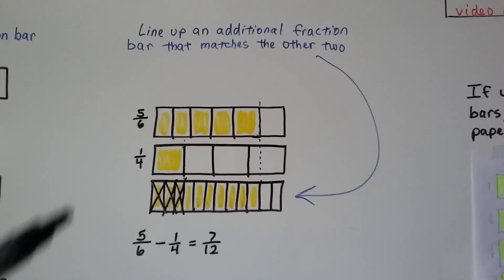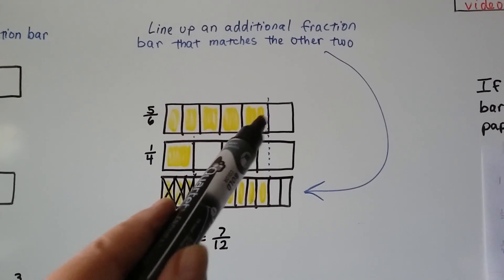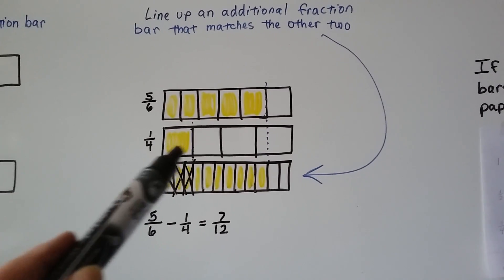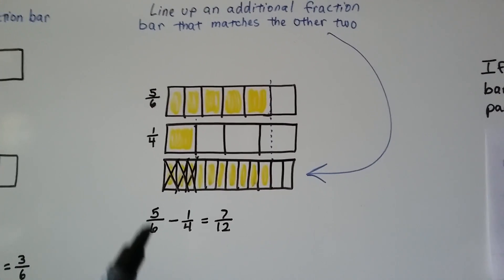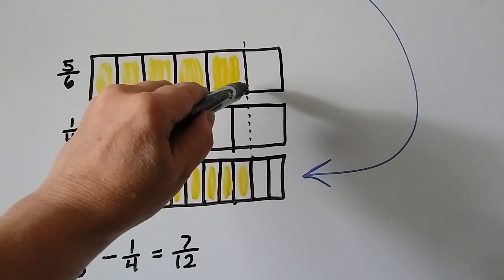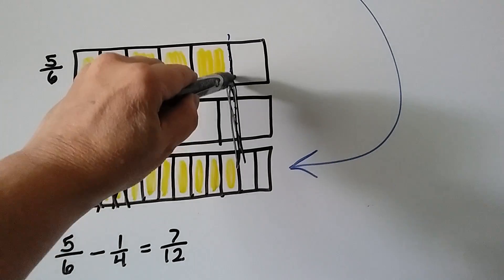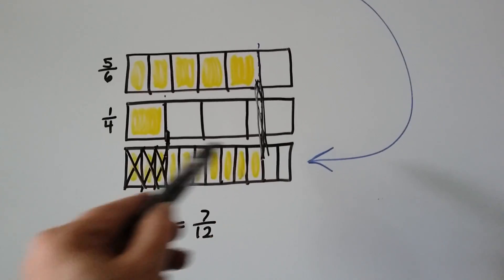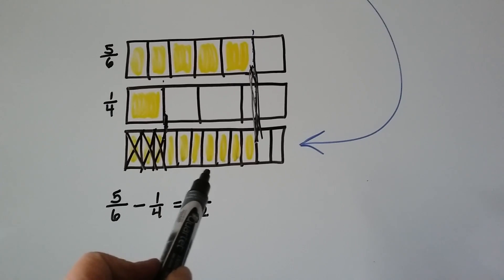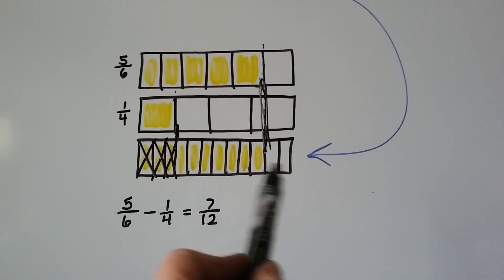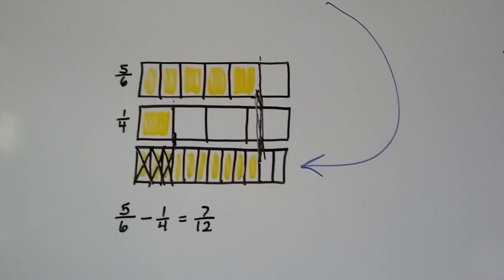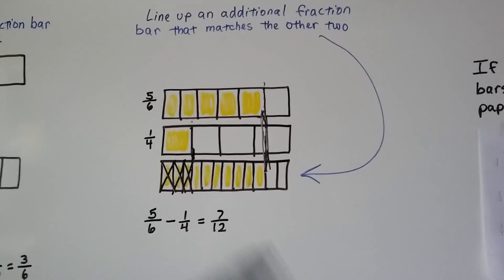We have five-sixths — this bar is broken into six and five of them are yellow, so that's five-sixths. We want to subtract one-fourth. So we have our fraction bar with one-fourth and one of the four is filled in. We need to add another fraction bar underneath it to help us. We find a fraction bar that lines up not only with the fourth, but also with the five-sixths. So five-sixths minus one-fourth is going to leave seven-twelfths. This is broken up into twelfths, and in order to take away a fourth we had to take away three of the twelfths, and that left seven-twelfths behind.